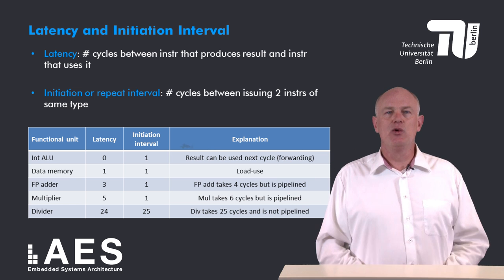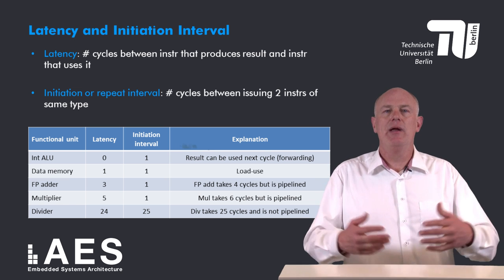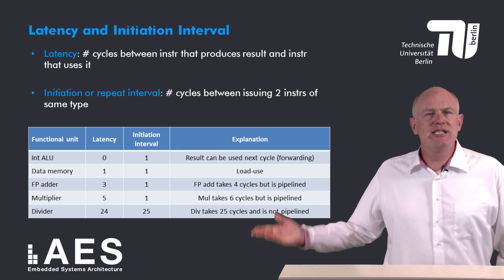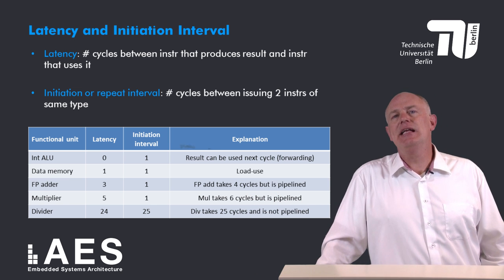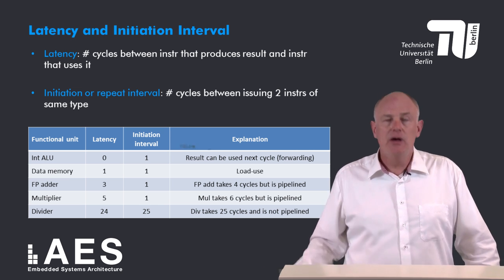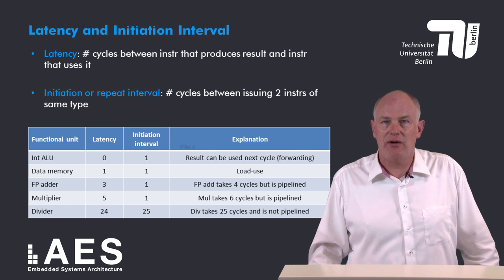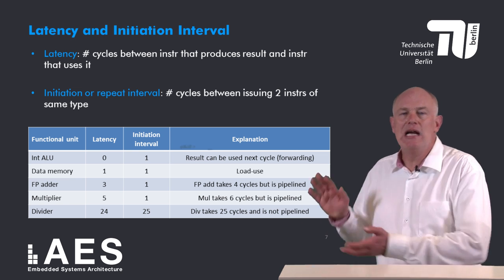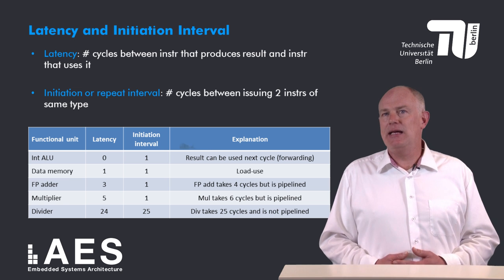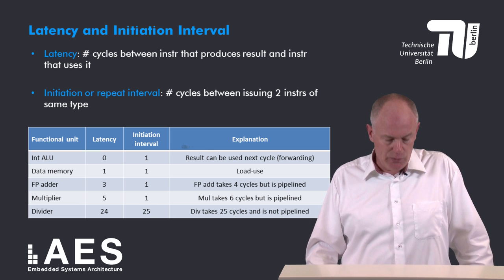Even though a floating point addition requires four execution stages, only three cycles are needed between the floating point add and the instruction that uses its result. Because the floating point adder is pipelined, its initiation interval is one since the next floating point addition can be issued in the next cycle. For the same reason, the latency of the floating point multiplier is five and its initiation interval is one. The divider on the other hand is not pipelined; because it requires 25 execution cycles its initiation interval is 25. In general, if an operation requires n execution cycles its latency is n minus 1; if it is pipelined its initiation interval is 1, and if not pipelined its initiation interval equals n.